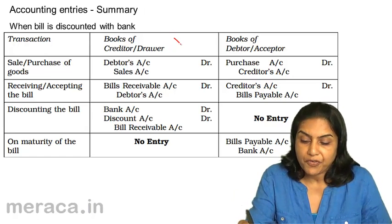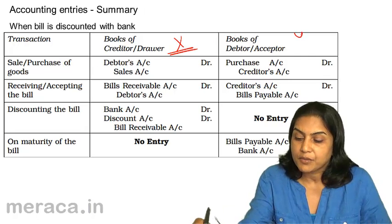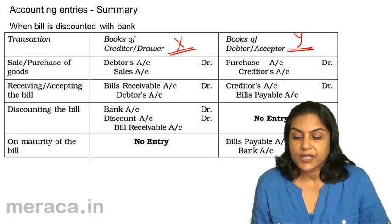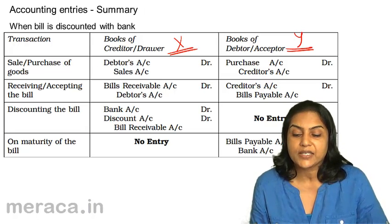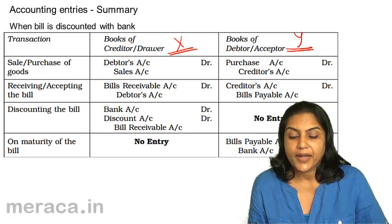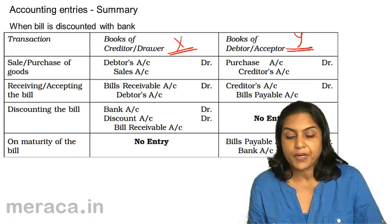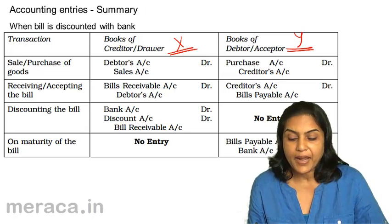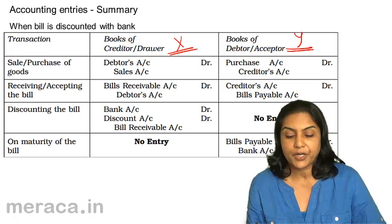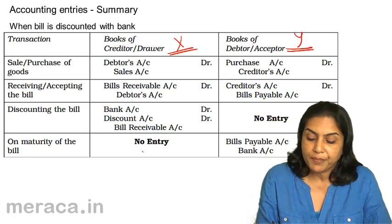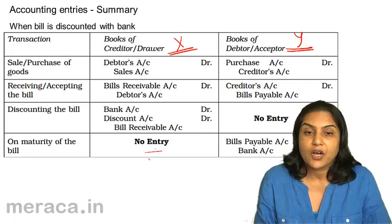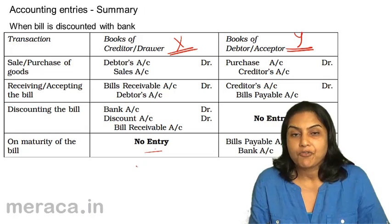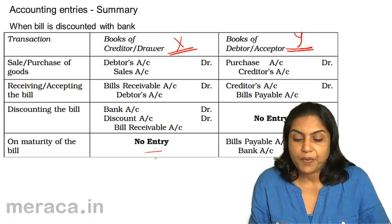Again, this is in the books of X and this is in the books of Y. On sale of goods in X's books: Y's account debit to sales. On getting the bill of exchange: bills receivable account debit to Y. On discounting the bill: bank account debit and discount account debit to bills receivable. On maturity of the bill, there is no entry because it is the bank which will present the bill. The bank collects the money from Y; X does not have to pass any entry.